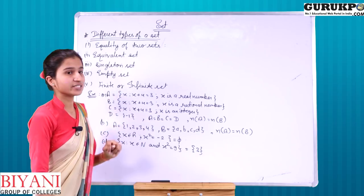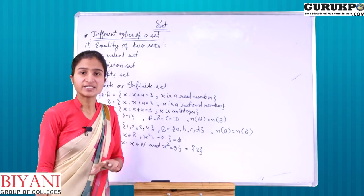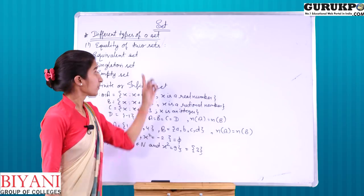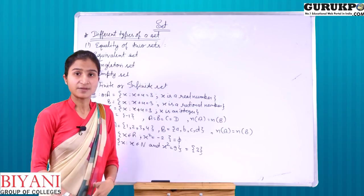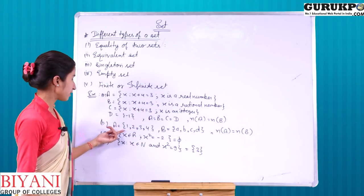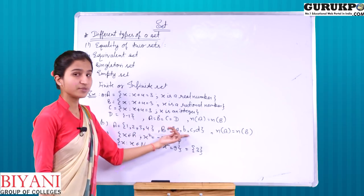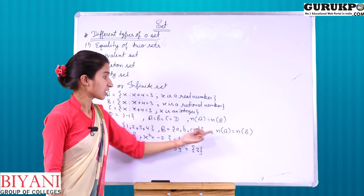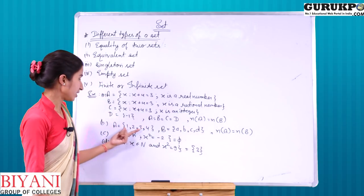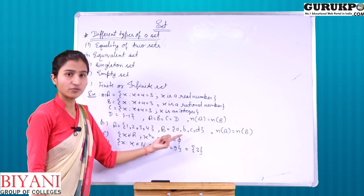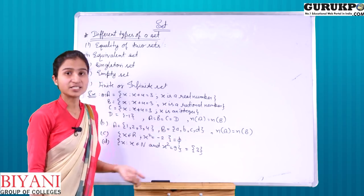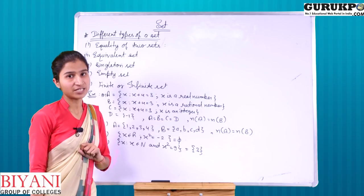Second type is the Equivalent Set. If A = {1, 2, 3, 4} and B = {A, B, C, D}, then the number of elements of set A equals the number of elements of set B — but the elements themselves are not equal. When the number of elements is equal but elements are different, the sets are called Equivalent Sets.